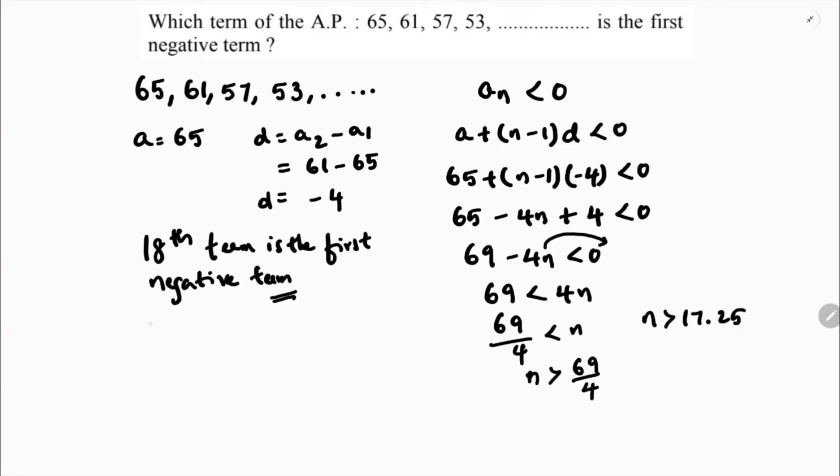If you want you can check. If you check 17th term you will get positive. 18th term will be negative. See, 17th term is a plus 16d. a is 65 plus 16 into minus 4, which is 65 minus 64, which is 1, which is positive.